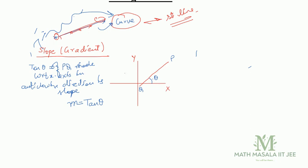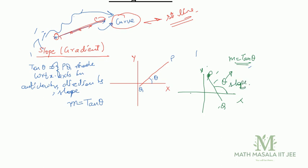Let's write a note. If I have this definition and the line is made like this — this is our y-axis, this is our x-axis, and line PQ makes an angle theta — then m is equal to tan of theta. That will be the slope of line PQ. The tangent of this angle is the slope.